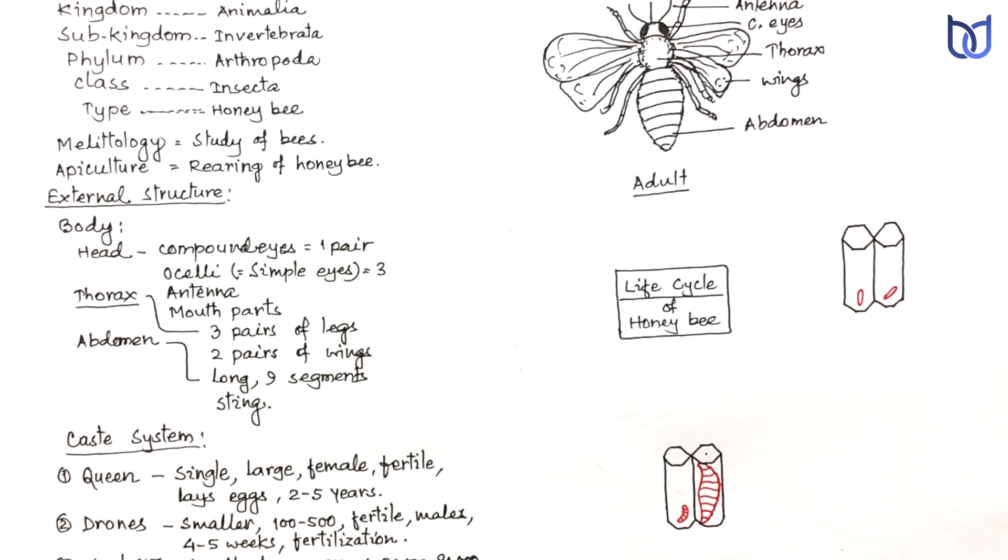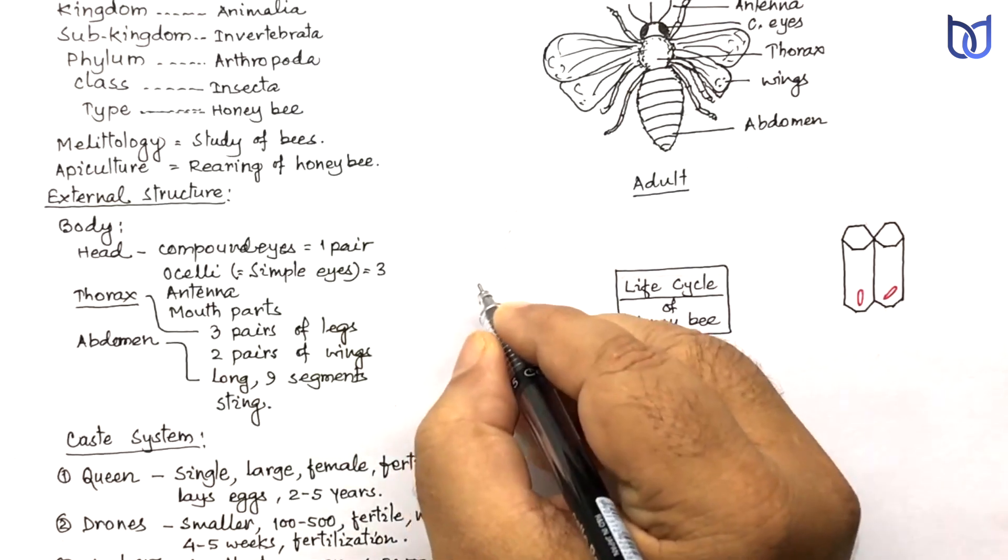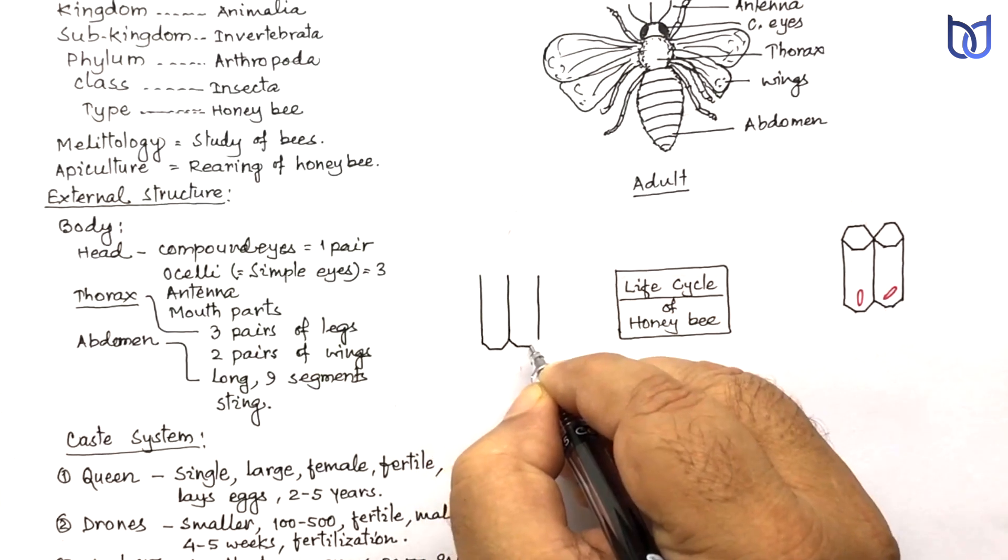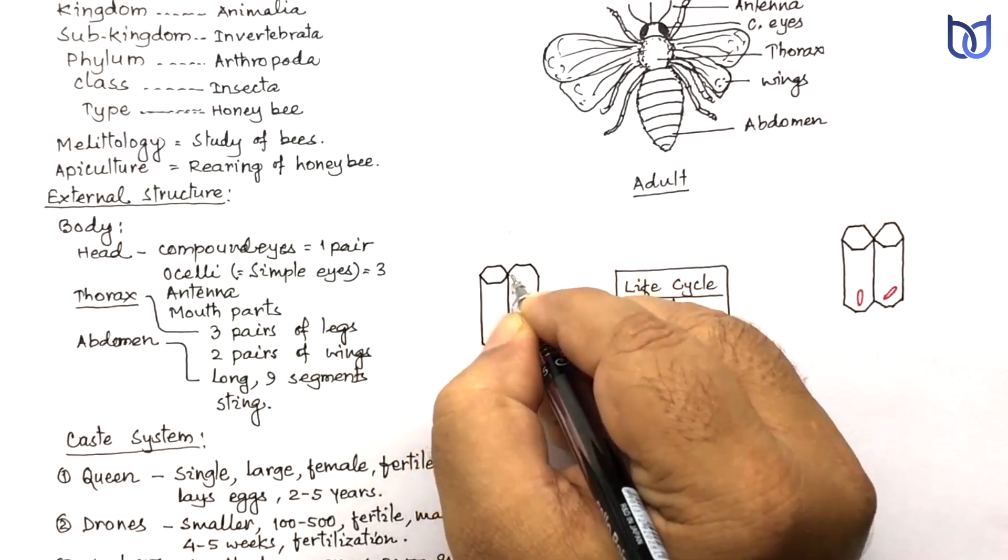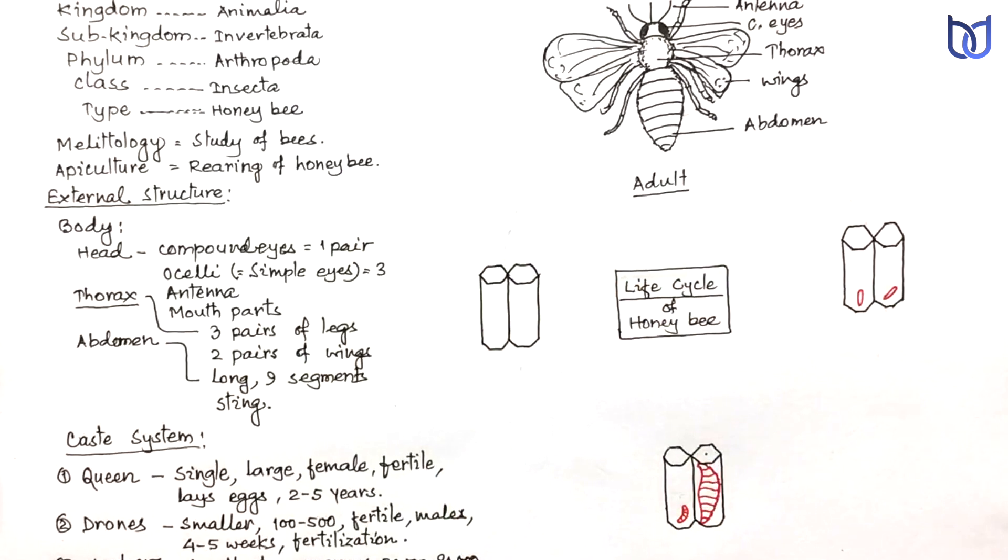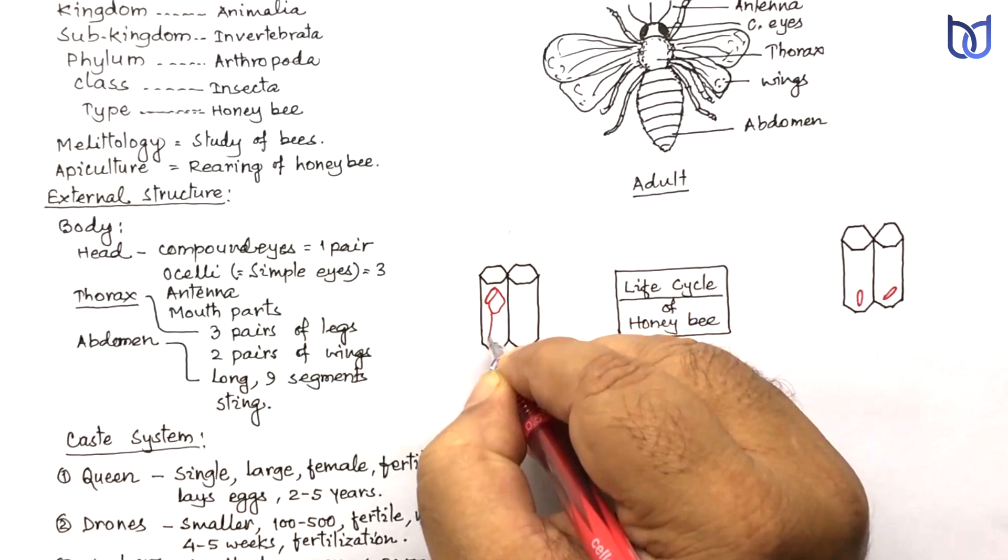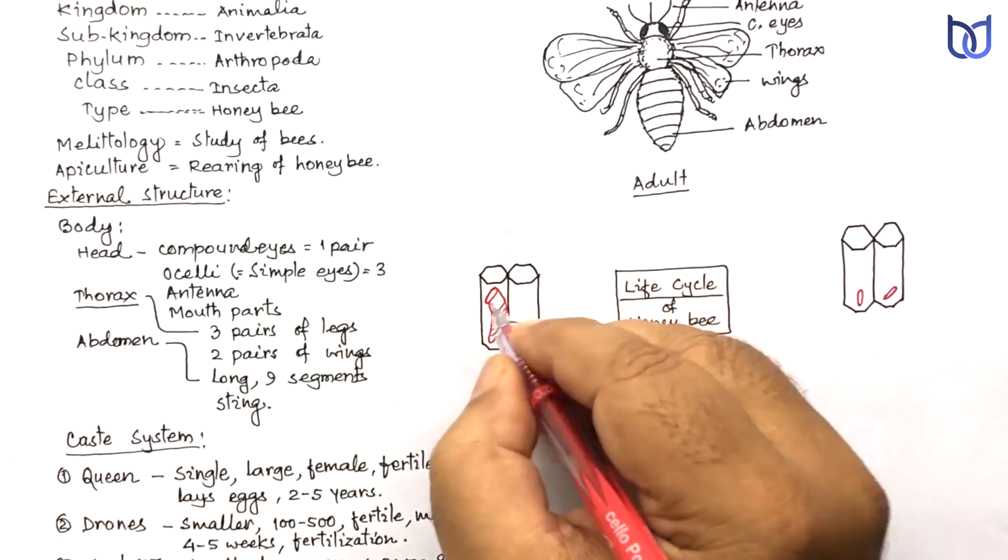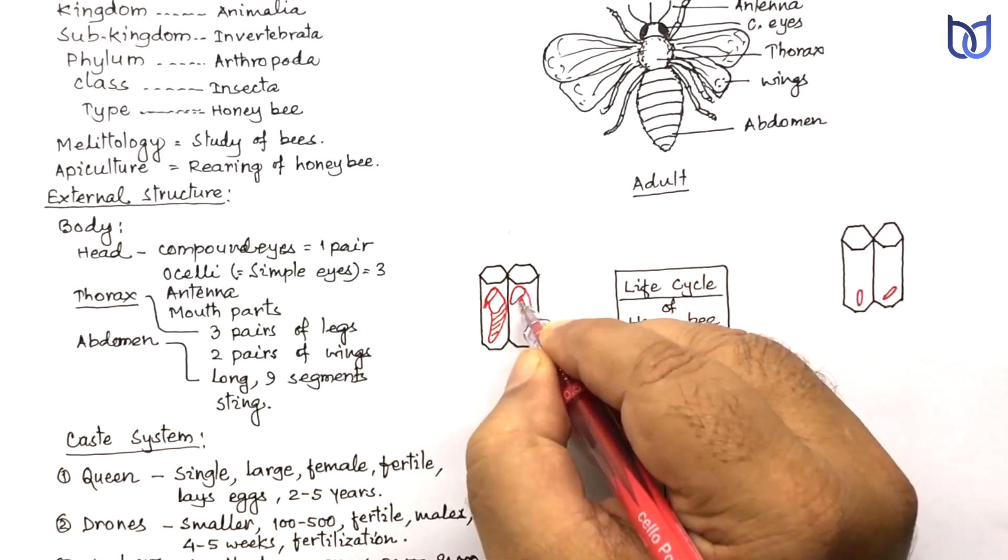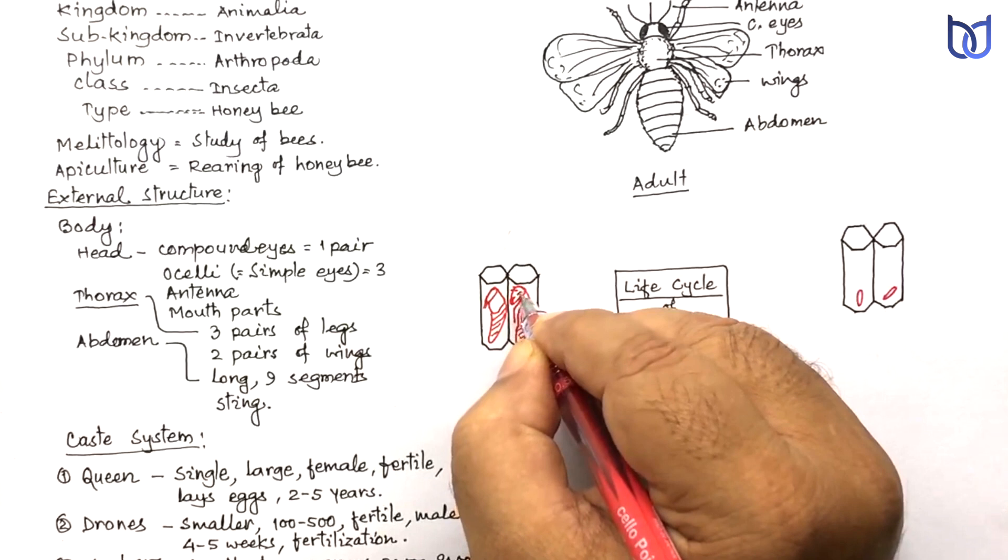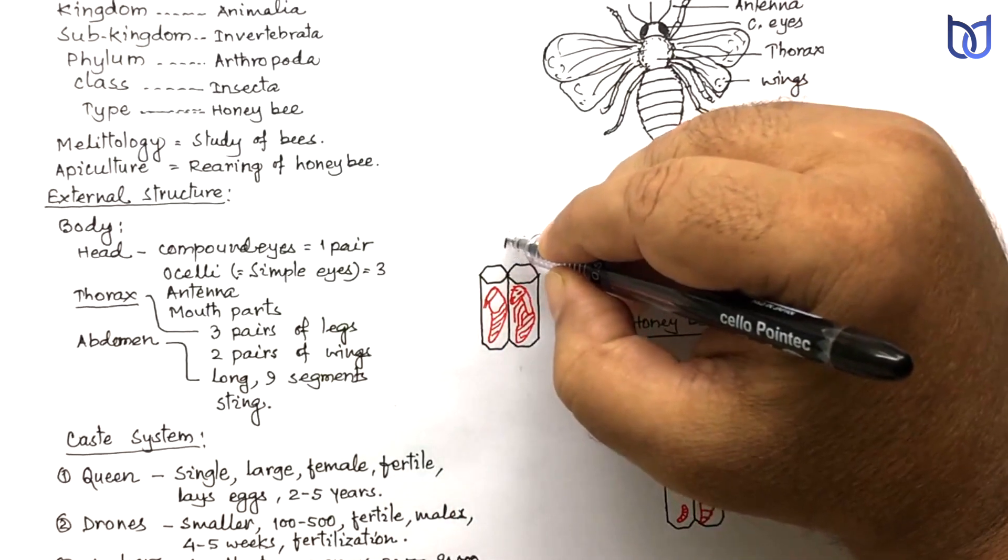Pupa is non-feeding stage. It develops inside the cells of the hive. Later pupa changes into adult.